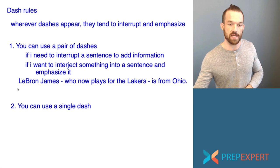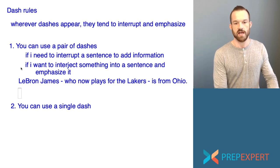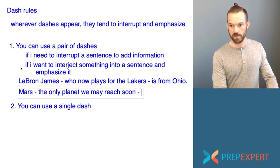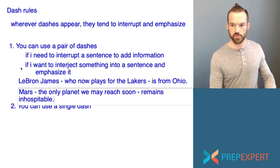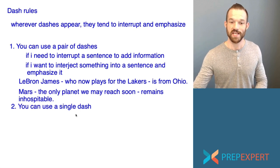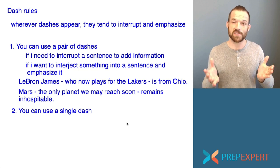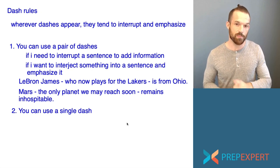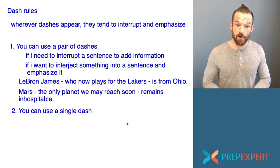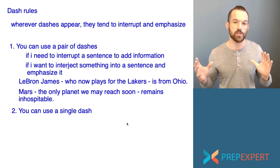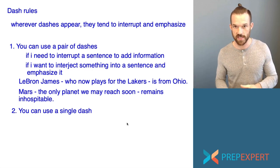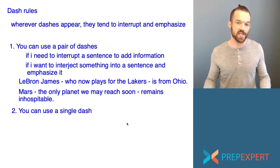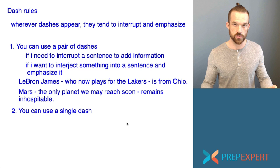Let me give you examples of using a pair of dashes. I could say: 'LeBron James — who now plays for the Lakers — is from Ohio.' If I want to emphasize that interjected information, I separate it from the rest of the sentence using a pair of dashes. Another example: 'Mars — the only planet we may reach soon — remains inhospitable.' The grammatical structure between the dashes here is an appositive. So if you need to add or interject information into a sentence, you can separate it using a pair of dashes, the same way you can use a pair of commas — favoring dashes when you want to emphasize that information.